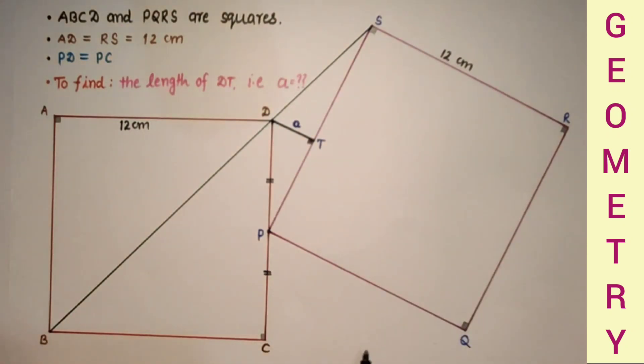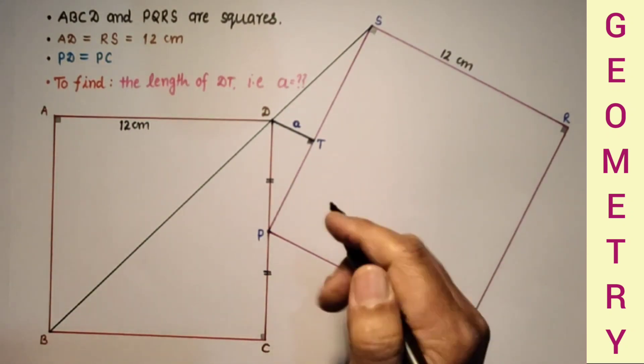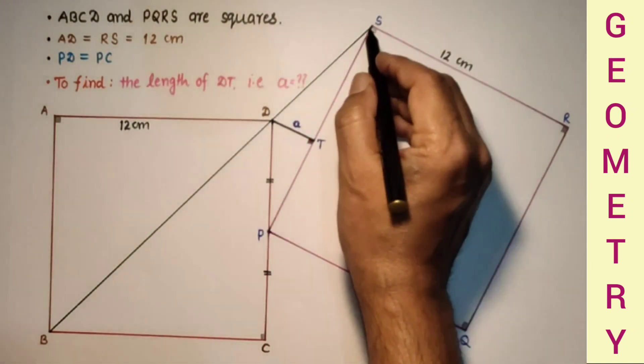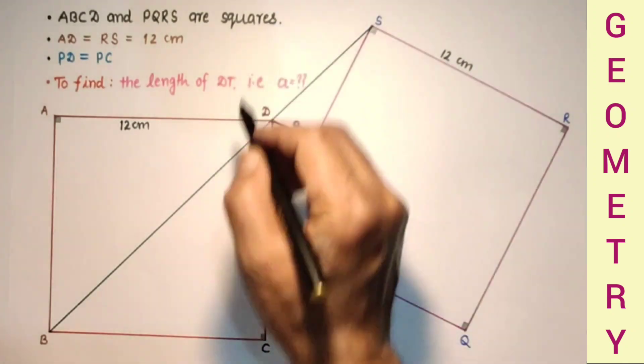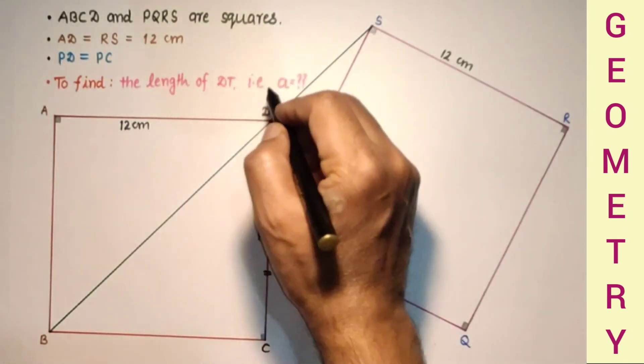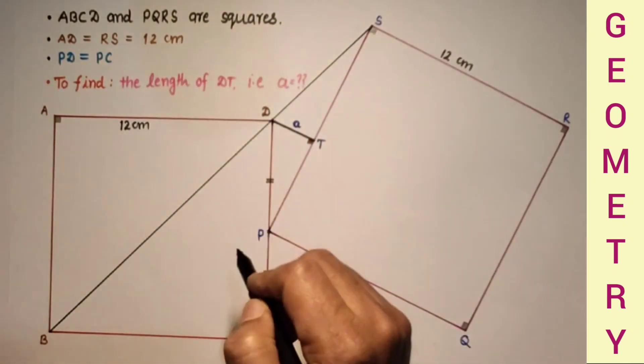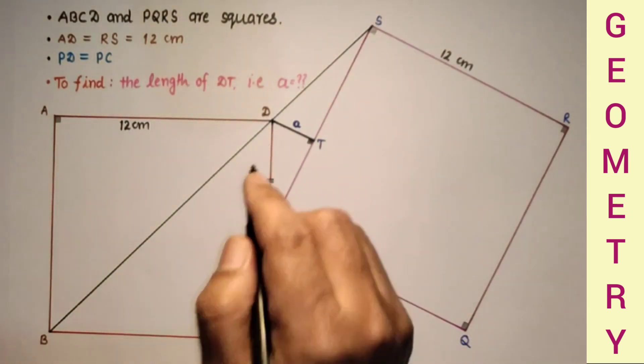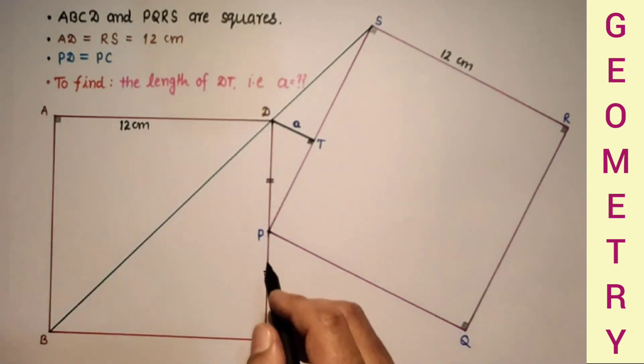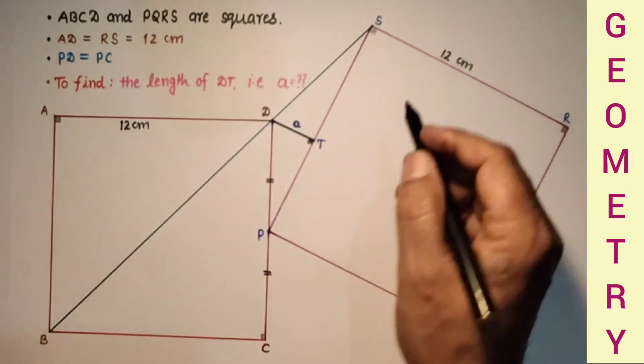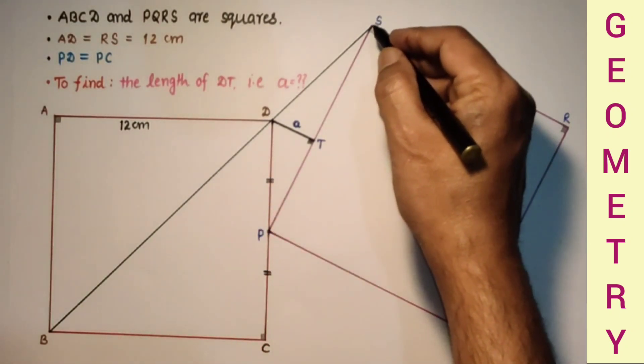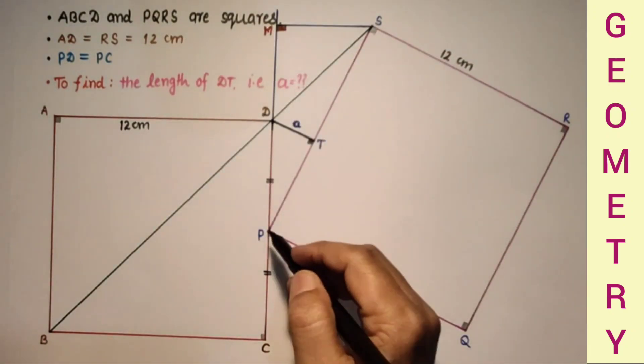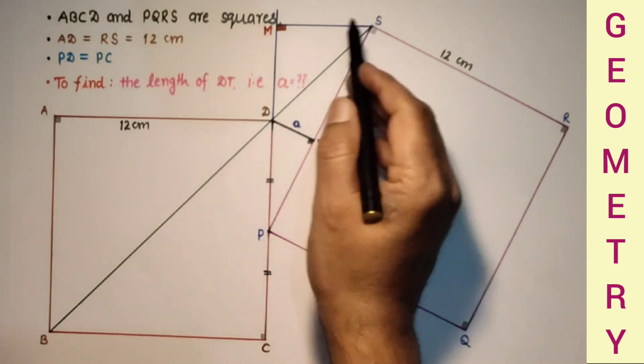What I have found is if we extend this AD and from this vertex S draw a perpendicular, that would be a right angled triangle. And both right angled triangles will be similar. So we are going to extend PD and drop perpendicular from vertex S. PD is extended and SM is drawn perpendicular.